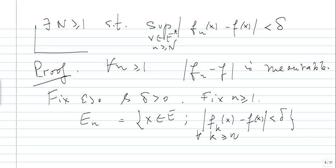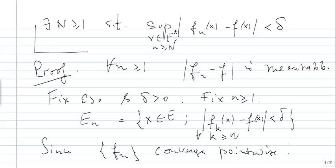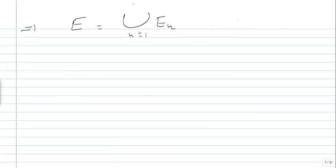This is an intersection of measurable sets, since |F_k - F| are measurable, so the E_N's are measurable subsets. Since the sequence F_N converges pointwise to F, we have that E equals the union of all the E_N's. By the definition of limit, we note that the E_N's form an ascending (increasing) sequence.